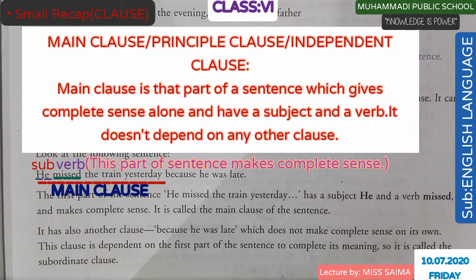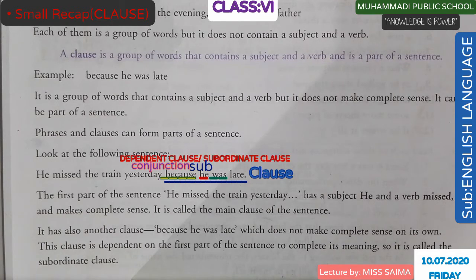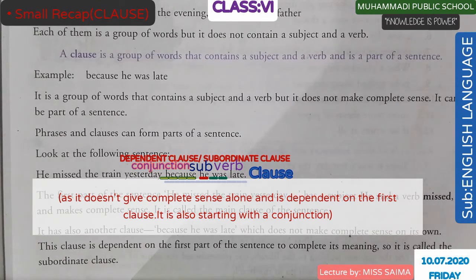There is also another clause: 'Because he was late.' This is another part of the sentence and there is no complete sense in it. Until we read the first sentence, we will not understand it. This clause is dependent on the first part of the sentence to complete its meaning. So it is called the subordinate clause.